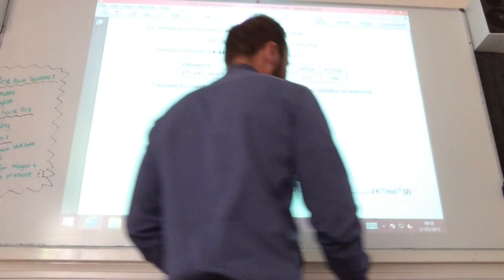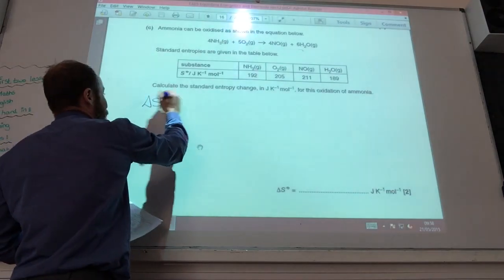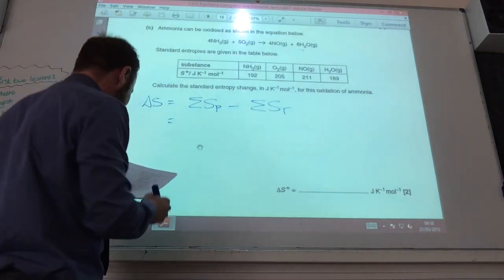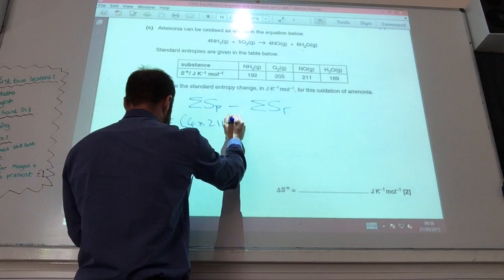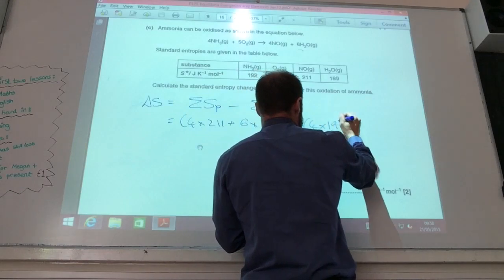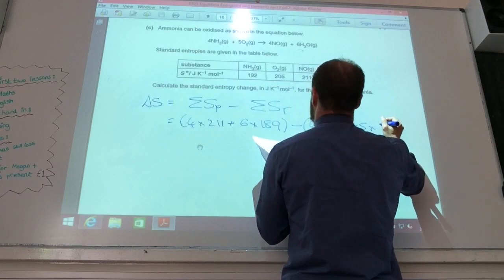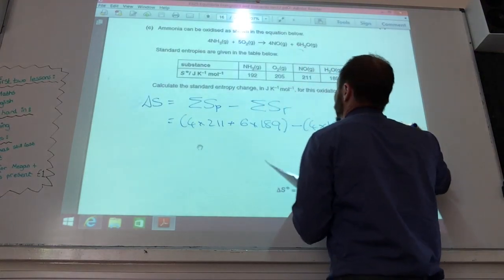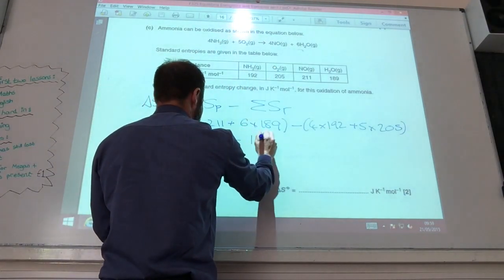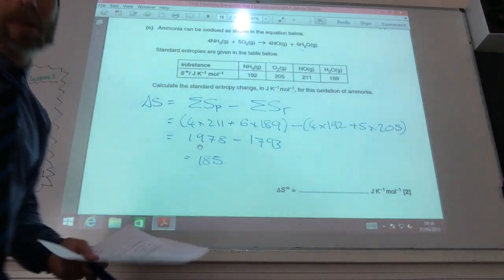Right, now I want me to calculate delta S for this equation here. Delta S for the reaction is the sum of the product minus the sum of the entropy for the reactant. So it's 4 times 211 plus 6 times 189 minus 4 times 192 plus 5 times... I've got it to be 5 times 205 for oxygen. That comes to 1978 minus 1793, which gives you 185 joules per Kelvin per mole.